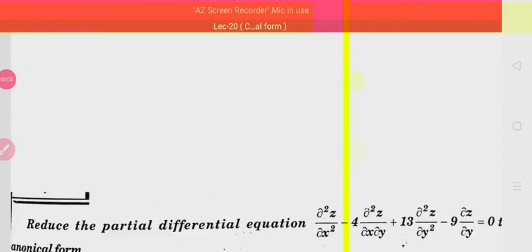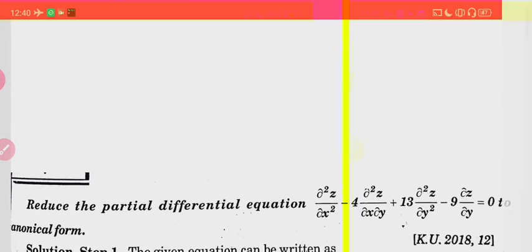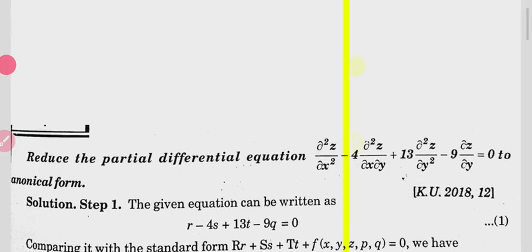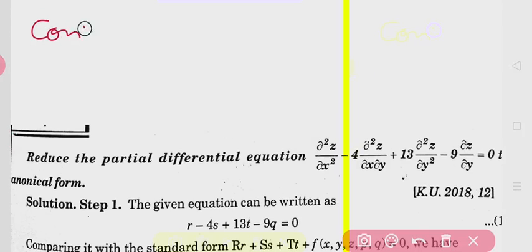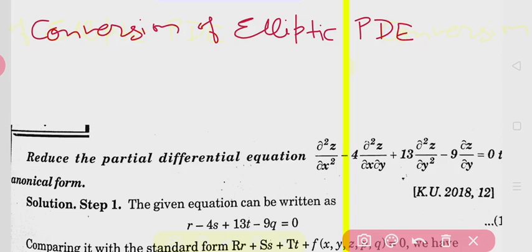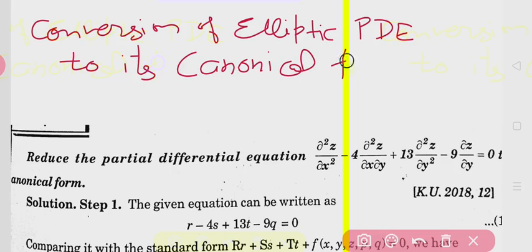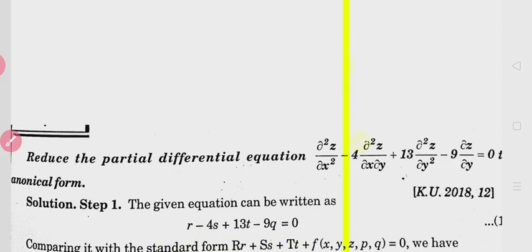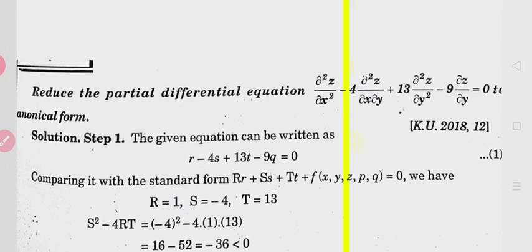Hello students. In the last video lecture, we talked about the conversion of parabolic PDE to its canonical form. Today we will talk about conversion of elliptic PDE to its canonical form. The method will be the same as we discussed for hyperbolic and parabolic PDE. The following example will clear the idea of how to convert an elliptic PDE to its canonical form.